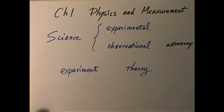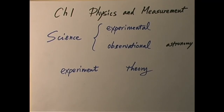Chapter 1: Physics and Measurement. In this chapter, we're going to look at how we do measurements in physics and what it takes to make scientifically accurate measurements.